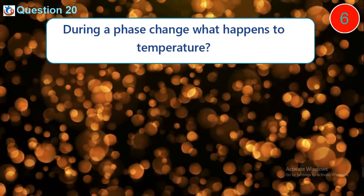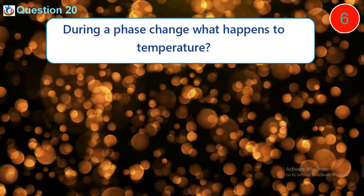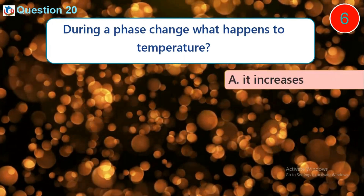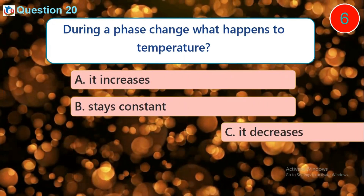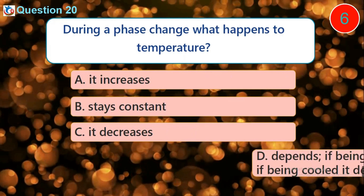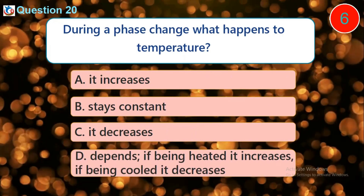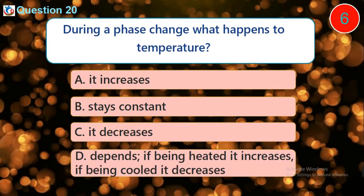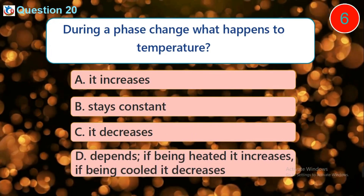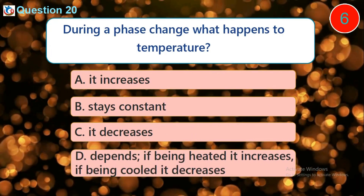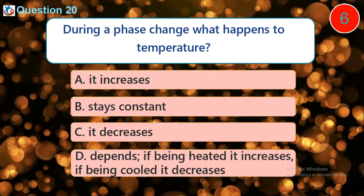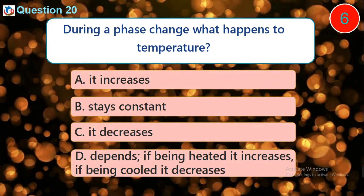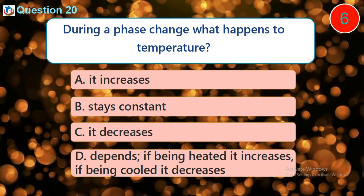Question 20. During a phase change, what happens to temperature? A. It increases. B. It stays constant. C. It decreases. D. It depends — if being heated, it increases; if being cooled, it decreases.